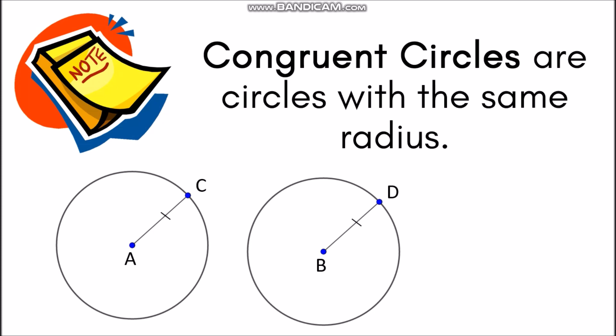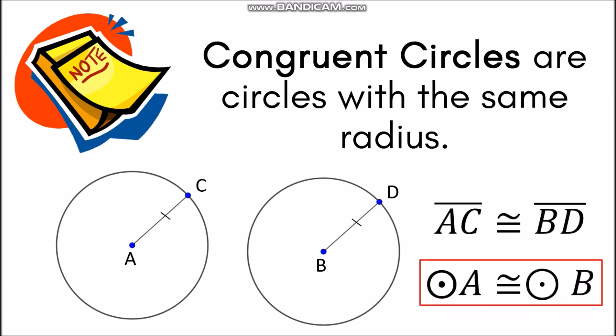You also have to take note that congruent circles are circles with the same radius. So for circle A, we have segment AC, and for circle B, we have segment BD. If segment AC is congruent with segment BD, therefore circle A is also congruent to circle B.